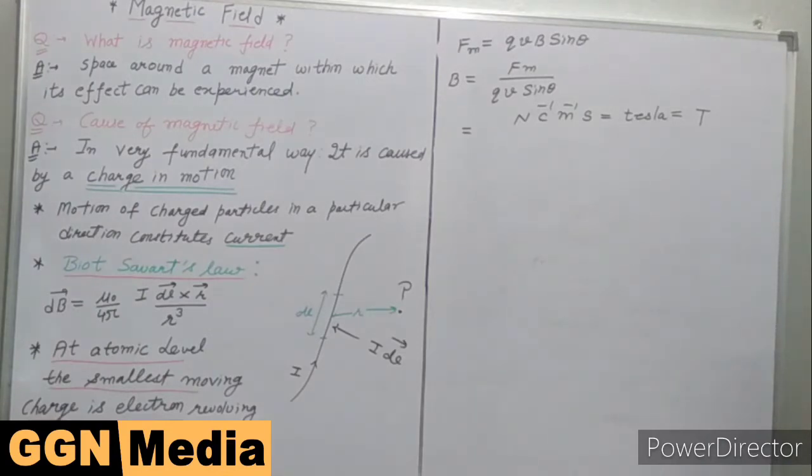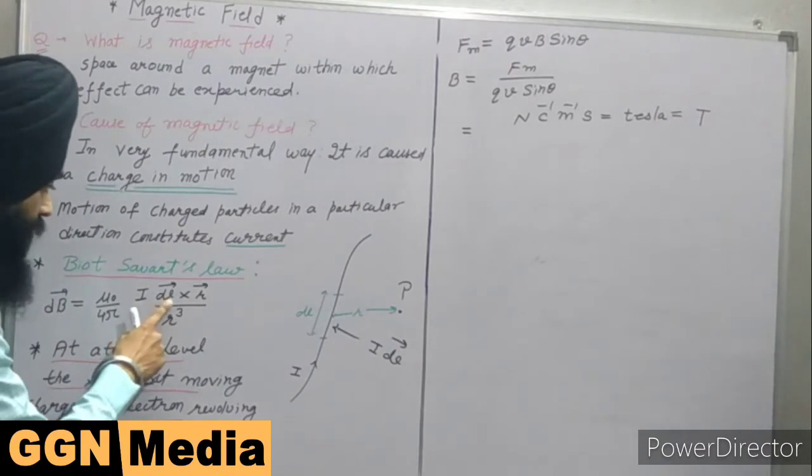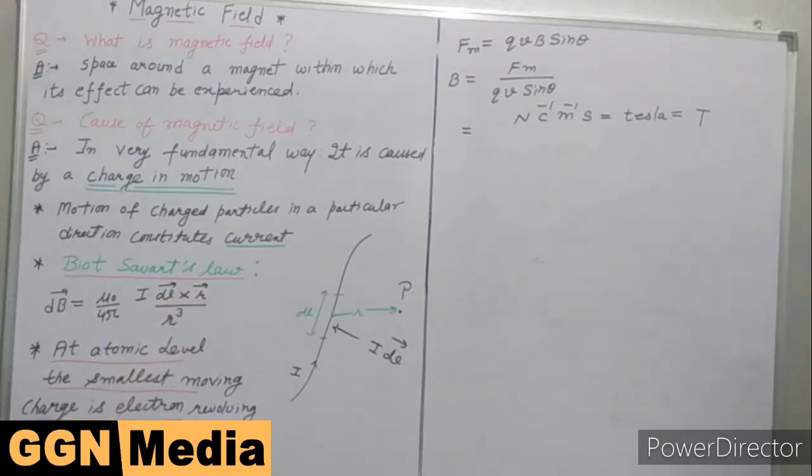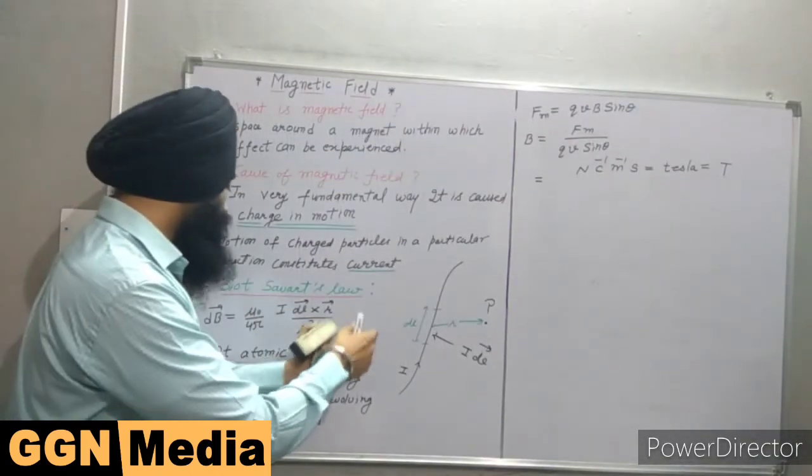From here, it is clear that the direction of B depends upon the direction of dL and vector R. Again, this vector B is perpendicular to the plane containing vector dL and R, and the direction of this magnetic field B can again be obtained by using right-hand thumb rule. So this is the form of Biot-Savart law.